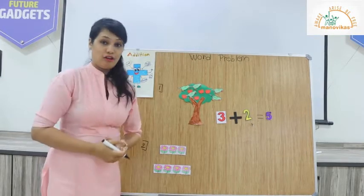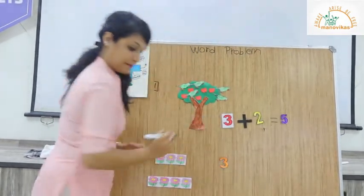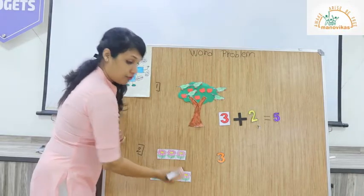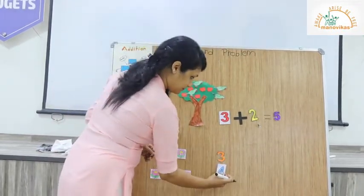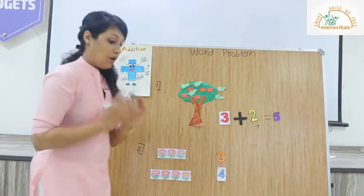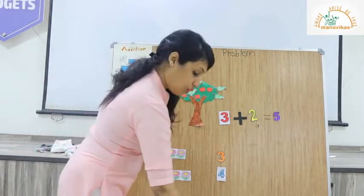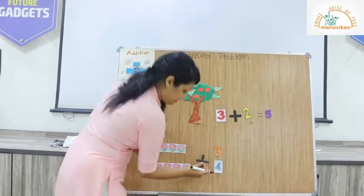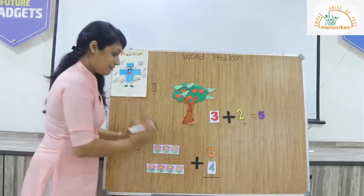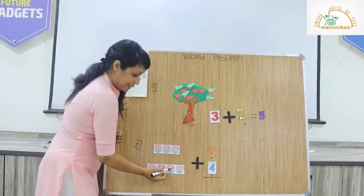Ali picked 3 flowers from a garden and John picked 4 flowers. So 1, 2, 3, 4. How many flowers did they pick all together? 'All together' means we use the addition sign. Let's count: 1, 2, 3, 4, 5, 6, 7. So they picked 7 flowers all together.